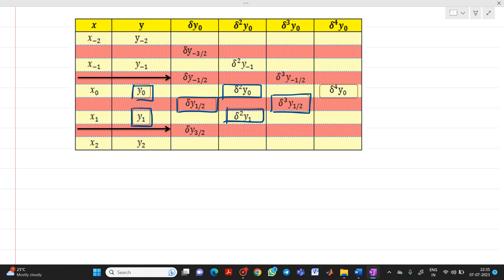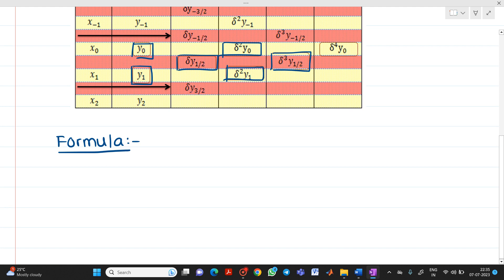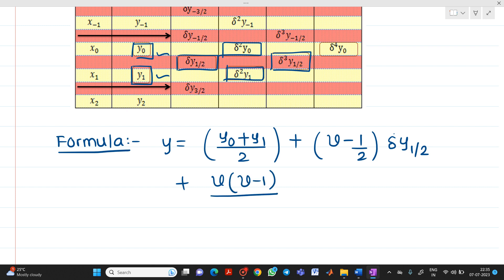Now, it will be easy for you to remember this formula with the help of this design. Let me write the formula for Bessel's method, Bessel's Central method. How to remember this? Wherever there are two values, we have to take average. So, let me write it as y equals y0 plus y1 divided by 2 because here we have two values plus v minus 1 by 2 into del y1 by 2